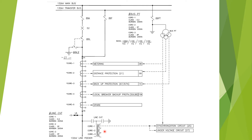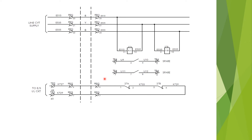How the under-voltage relay contact is used for the line earthing switch interlock will be discussed now. For each phase there exists one CVT. The secondary input from the CVT is taken to the CRP panel to supply the two terminals of the under-voltage relay. Since there exist three CVTs, two under-voltage relays are used for the line earthing switch interlock — 27A and 27B. The first under-voltage relay 27A is used between the red and yellow phase CVT secondaries; 27B uses the secondary voltage between the yellow and blue phase.